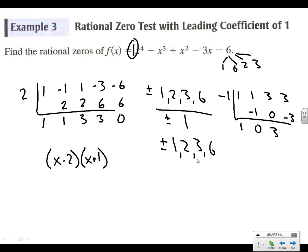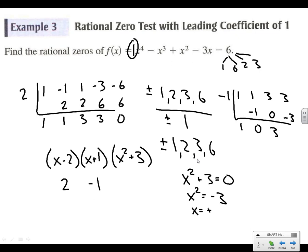We found all of our rational zeros. We could keep going if it said find all zeros. I also know the next part is x² + 3. So from here, my zeros are 2 and negative 1. And from x² + 3 = 0, we get x² = −3, so x equals plus or minus i times the square root of 3 — those are imaginary numbers, but that gives 2 more zeros. We've got 2 rational and 2 imaginary, totaling 4.